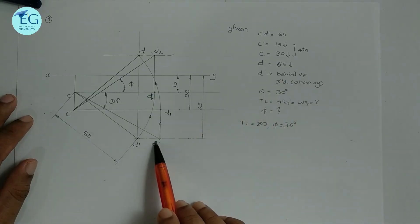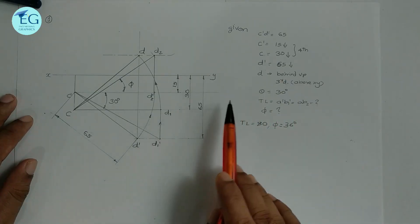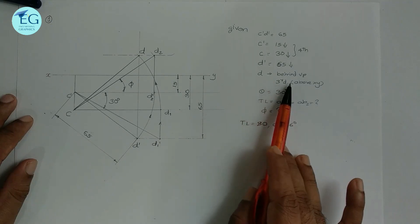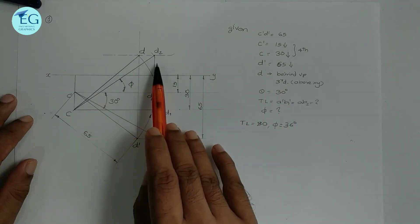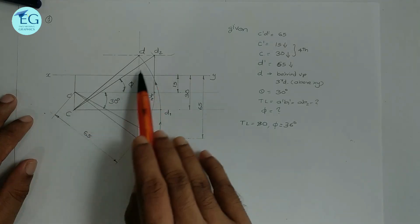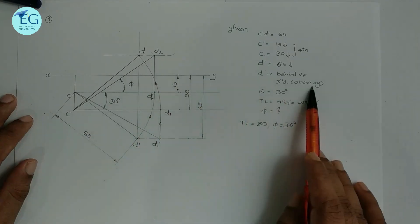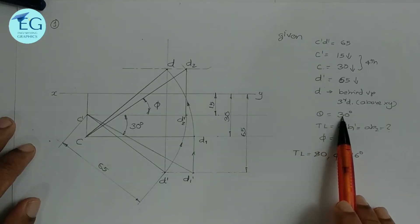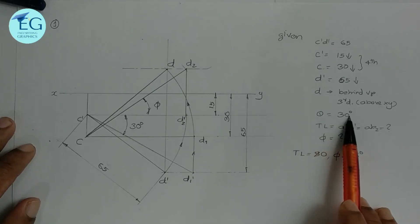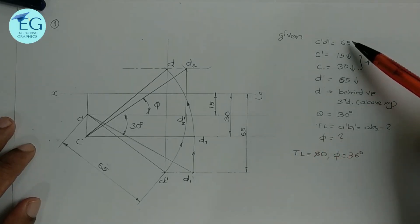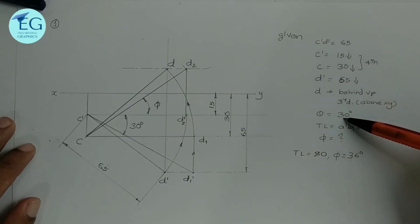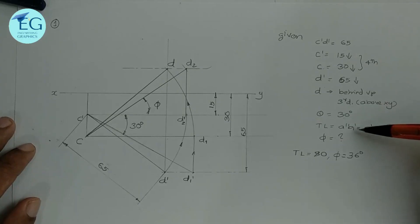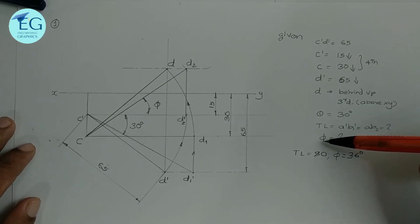If D is in the third quarter, that means it is already below HP and behind VP. So D is located 30 mm below the XY line in that direction. The inclination with HP is given as theta equal to 30 degrees. The direction C dash to D dash shows the inclination with HP. Find out its true length and true inclination with VP.